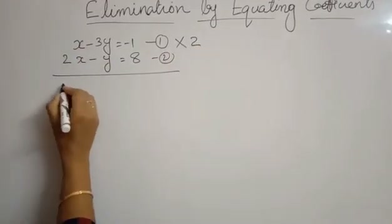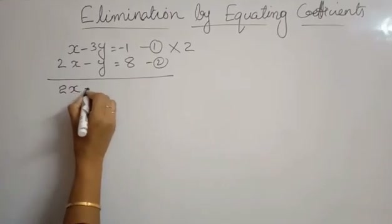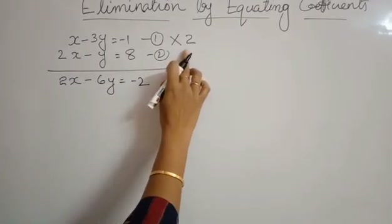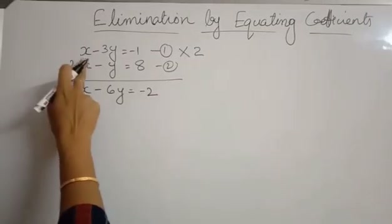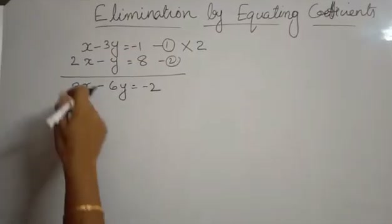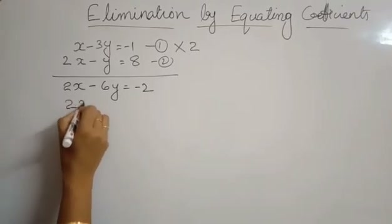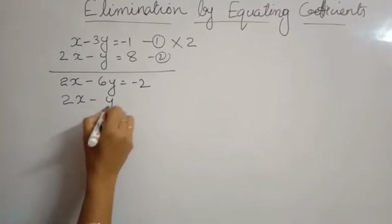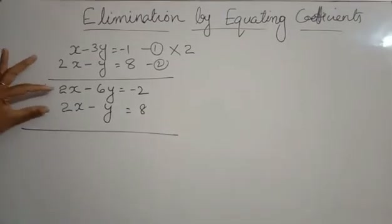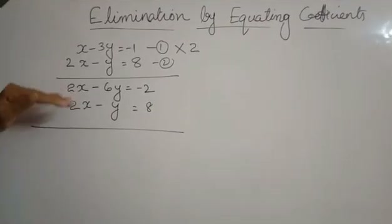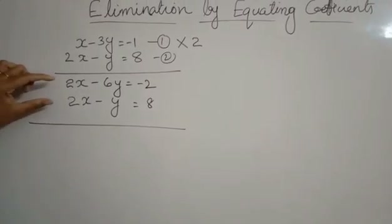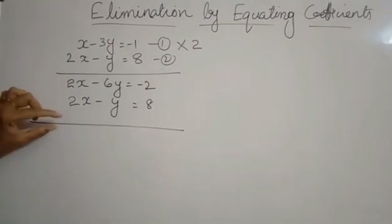Multiplying the first equation by 2, we get 2x minus 6y is equal to minus 2. Whenever you multiply by any number, you need to multiply each term of the equation by that number. Now write the second expression: 2x minus y is equal to 8. We have made the coefficient of x equal, so now we can subtract.